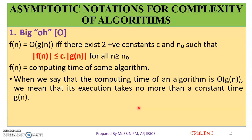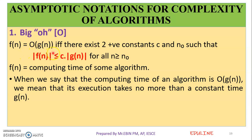The first one is Big O notation. We represent this as capital O. Big O notation has the condition: f of n is equal to O of g of n, if and only if there exist two positive constants c and n0,